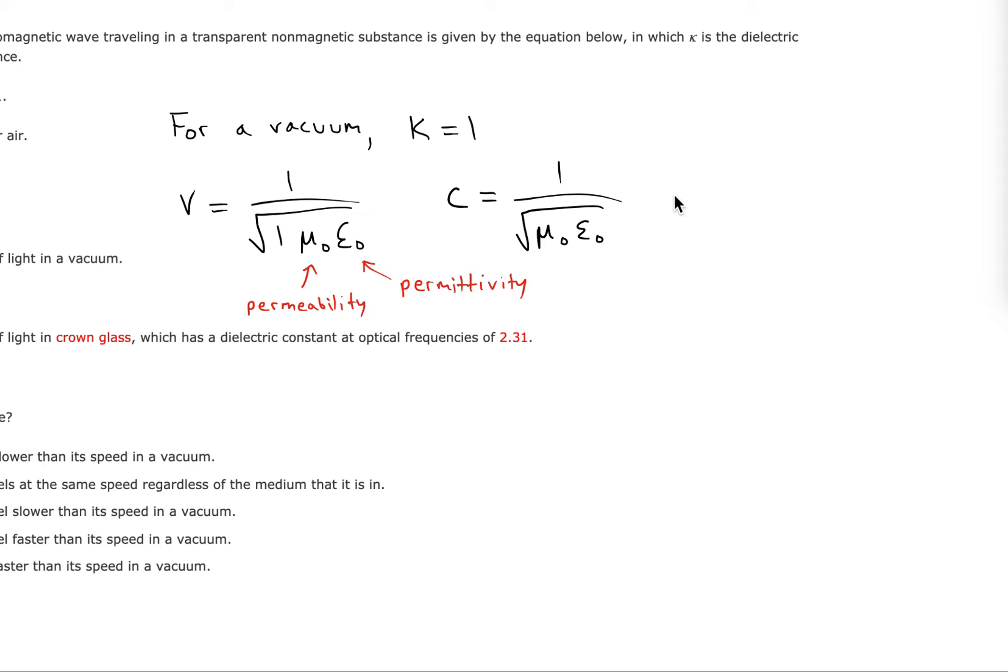We want to plug in what we know their values to be. We can use 4 pi times 10 to the minus 7 tesla meters squared per amp.